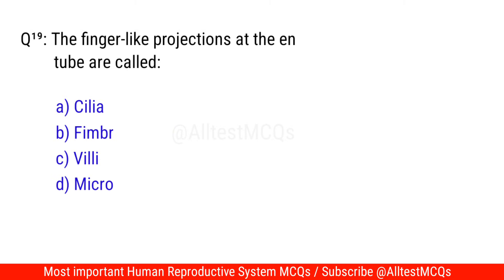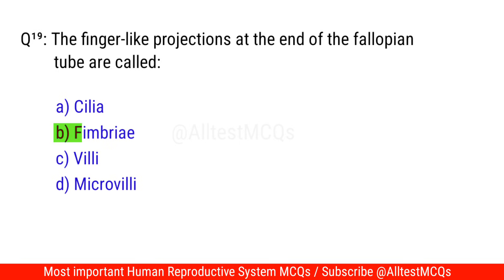Question No. 19: The finger-like projections at the end of the fallopian tube are called? The correct option is B. Fimbriae.